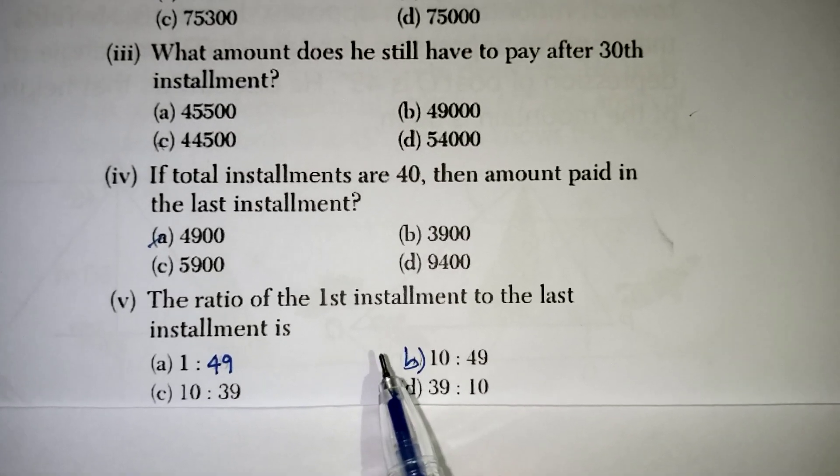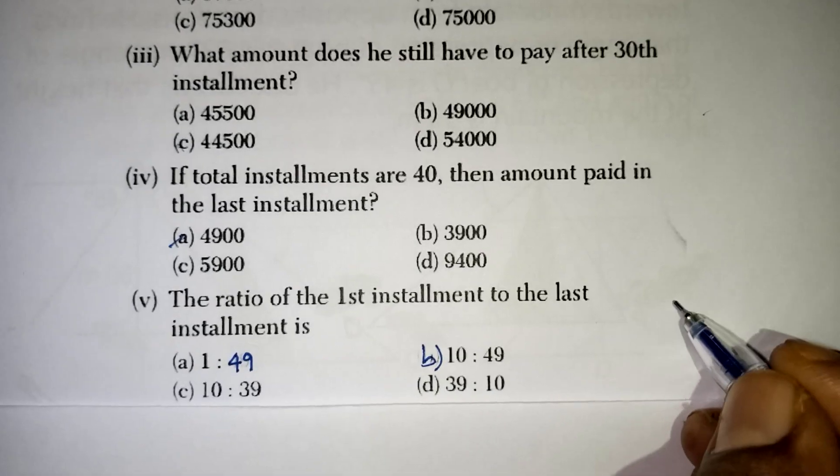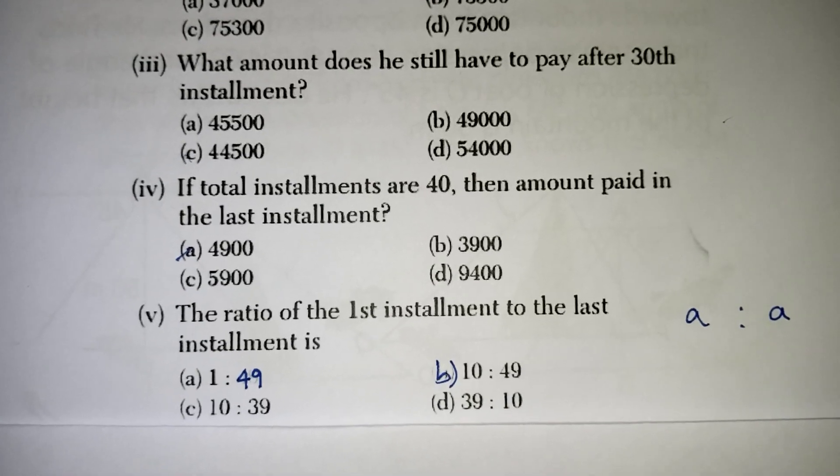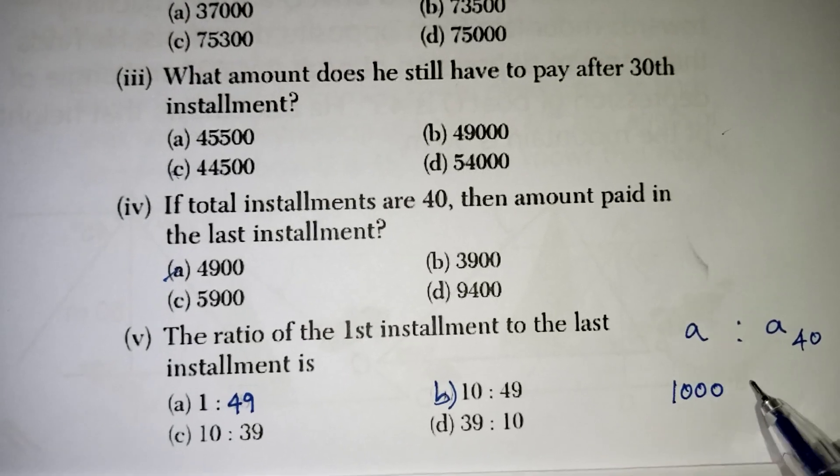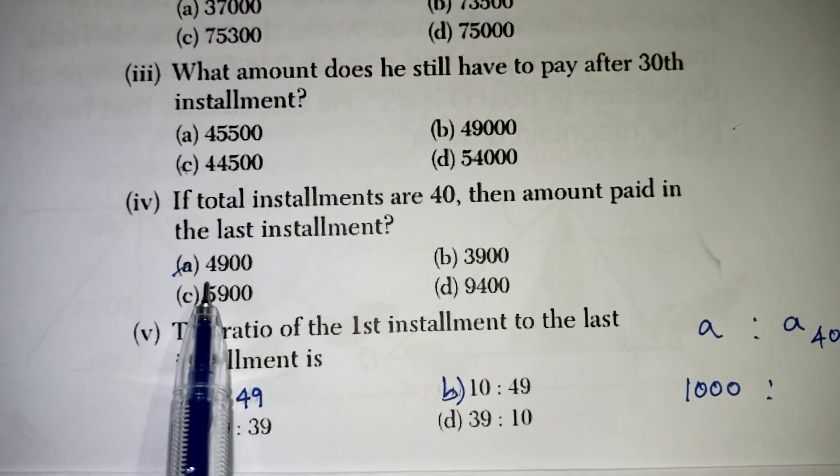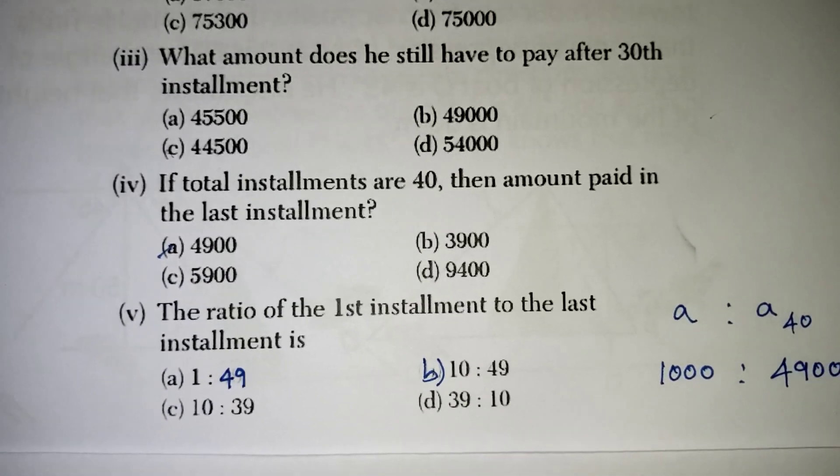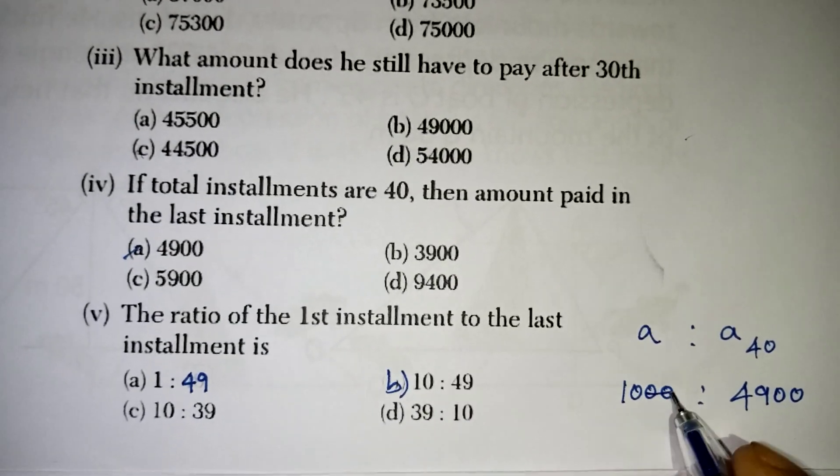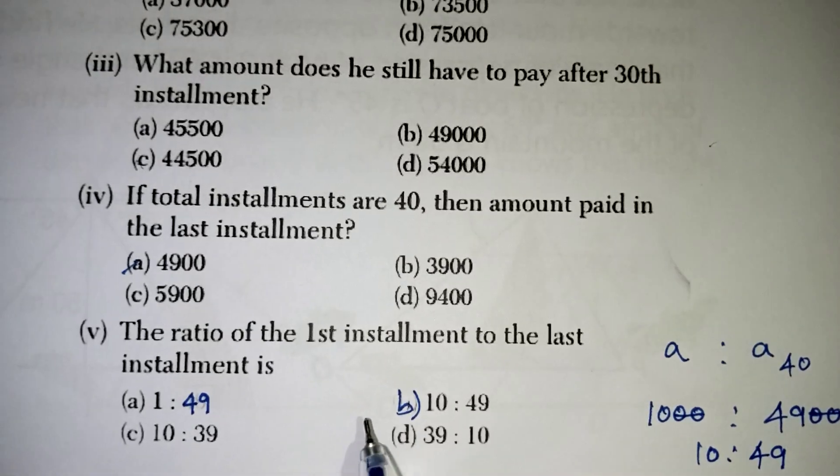Next question. The ratio of the first installment to the last installment. First installment is nothing but your A and the last installment is A40. So, A amount is given as 1000 first installment amount. 40th installment we have found out 4900. So, whenever the ratio is given we can go with the fractional or else we can cancel two zeros and two zeros here. So, 10 to 49 is your correct answer. That is your B option.